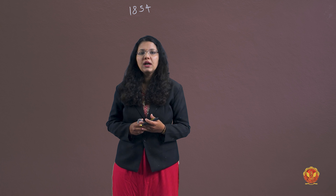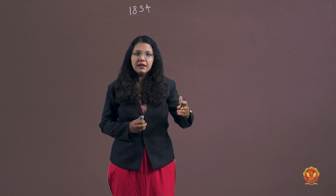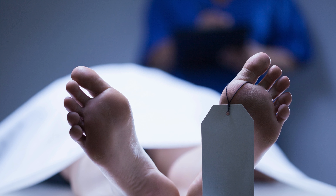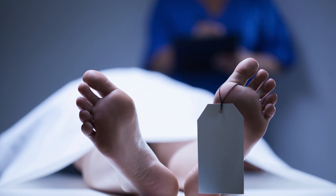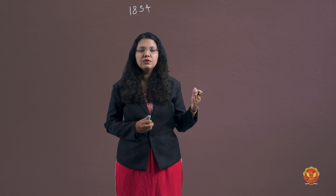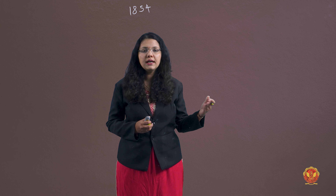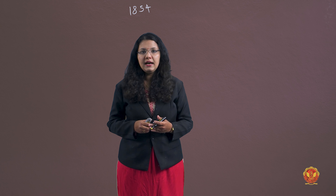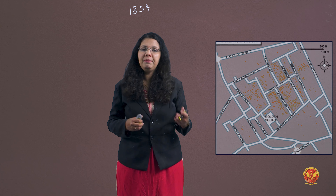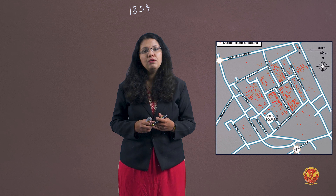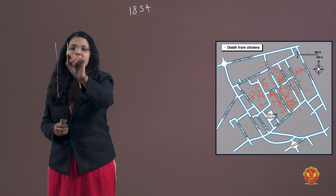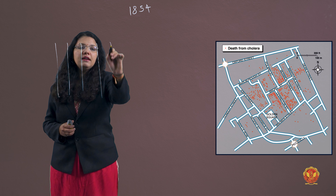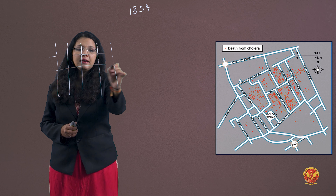Why was it happening? The government had a map prepared. They first made a map showing the streets and homes where there were many deaths of cholera. They marked the locations of cholera deaths on this street map.